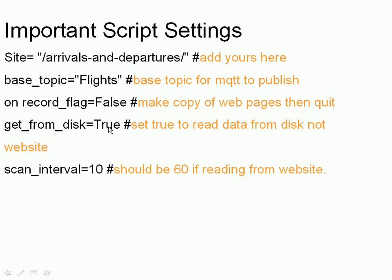Get data from disk is normally set to true — this is what you'd normally use. So you'd set record to false and get from disk to true, and it reads the web pages from disk. The scan interval I'm setting to 15 for this demo. If reading from the website, it's normally 60 seconds. The scan interval controls both how often data is read and how often it publishes to the MQTT broker, so for testing you set it lower to see things happen more quickly.